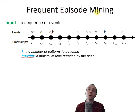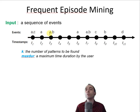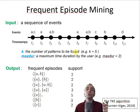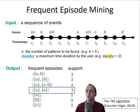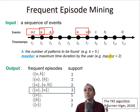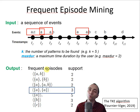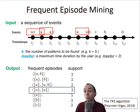Another example is frequent episode mining. Here we have a sequence of events over time: AC, then A, then AB, then A, AB, C, B, D, and so on. We want to find the most frequent patterns in this sequence. For example, we might find that A followed by A appears three times within a maximum duration of two time units. We can find all what we call episodes that repeat many times in a sequence of events, such as in a computer network.